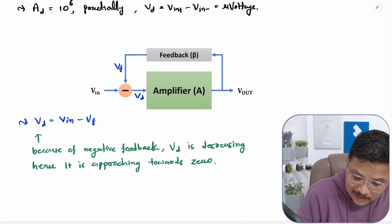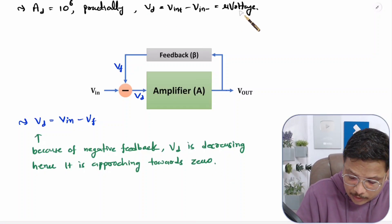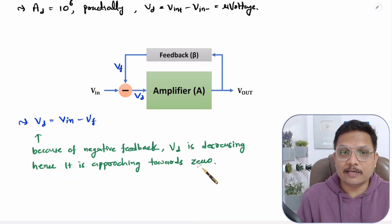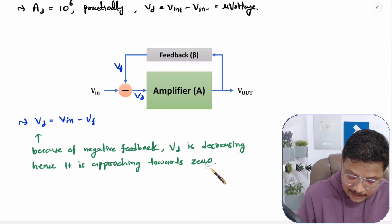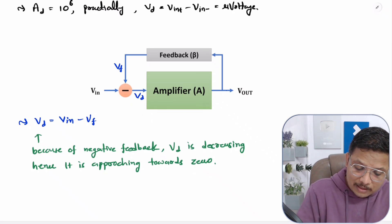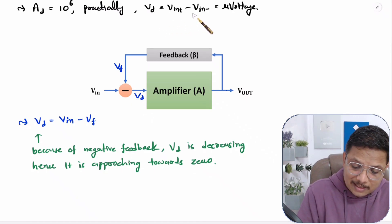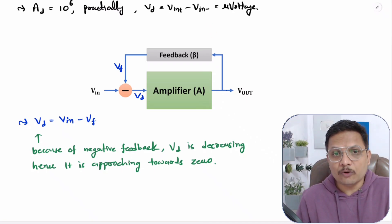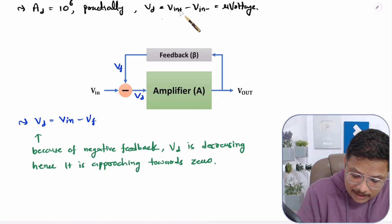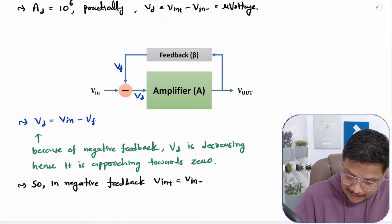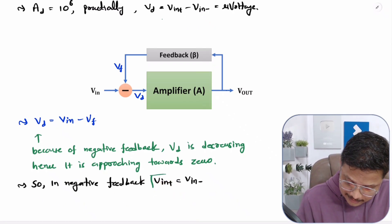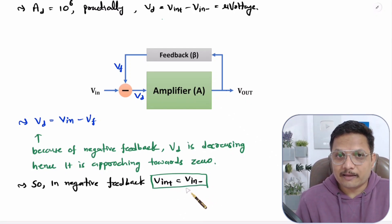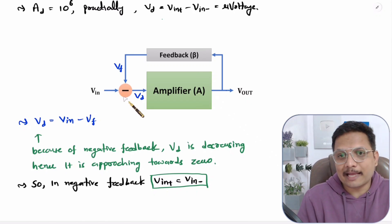It is already there in terms of microvoltage. Because of negative feedback, it is decreasing and approaching towards zero. If it is getting zero, then you can say V in plus equals V in minus. So in negative feedback, we can say V in plus is equal to V in minus. This is the virtual short concept, and that is happening practically in negative feedback.